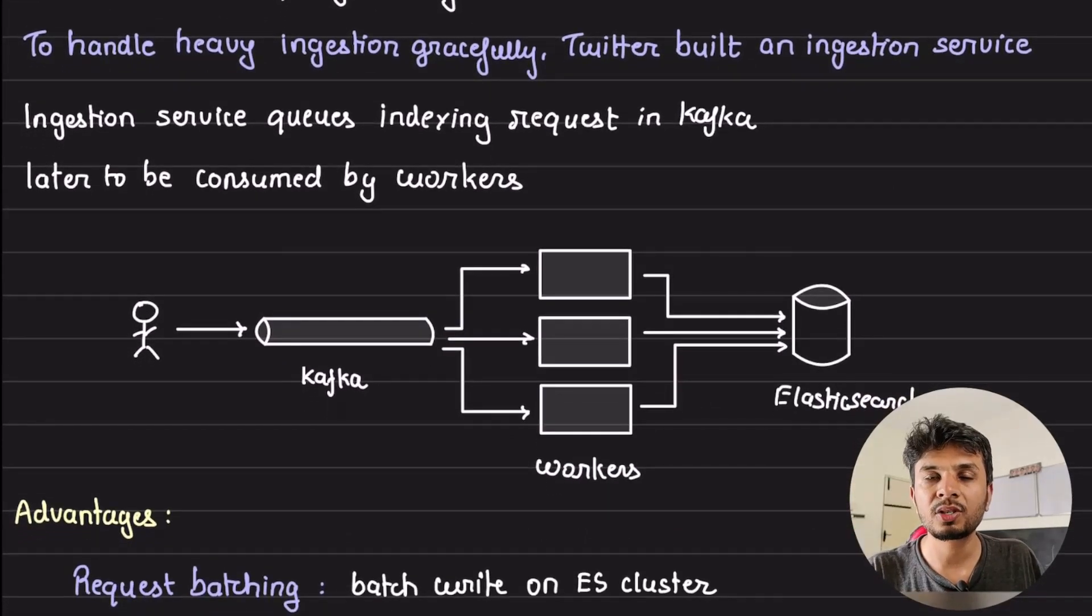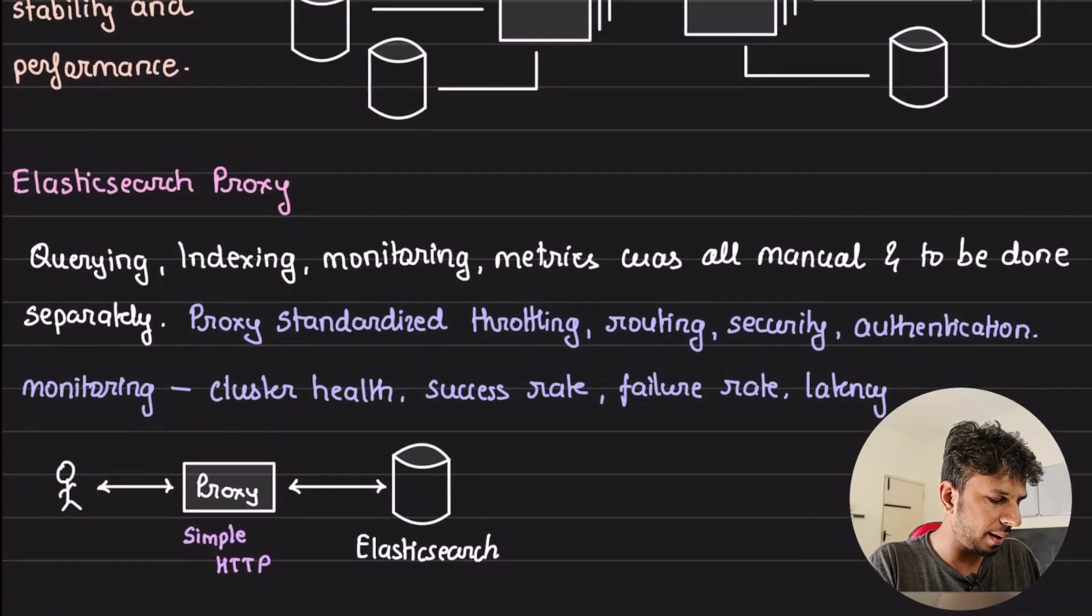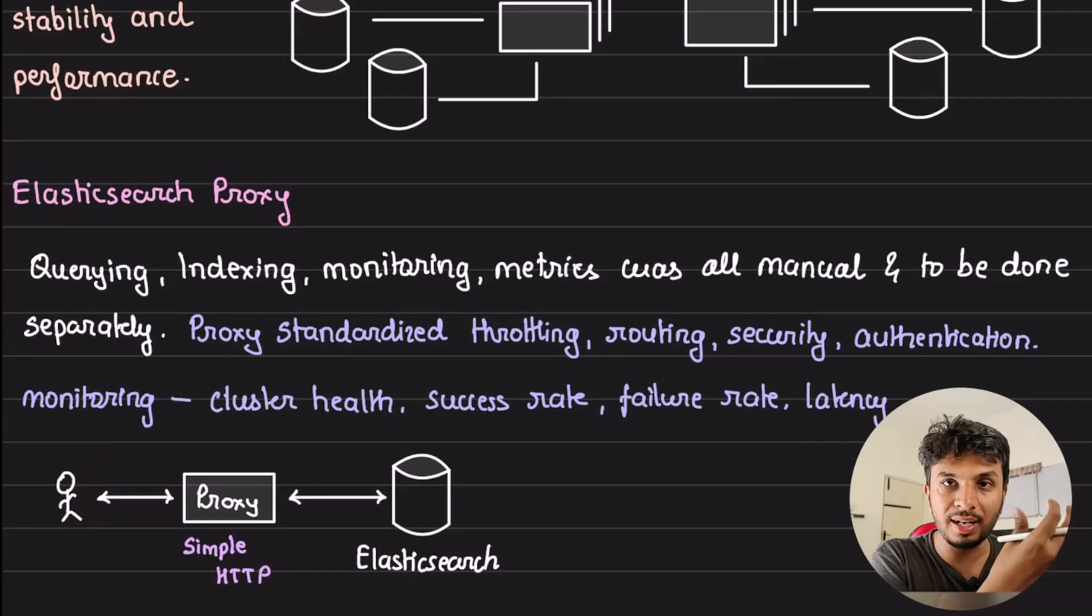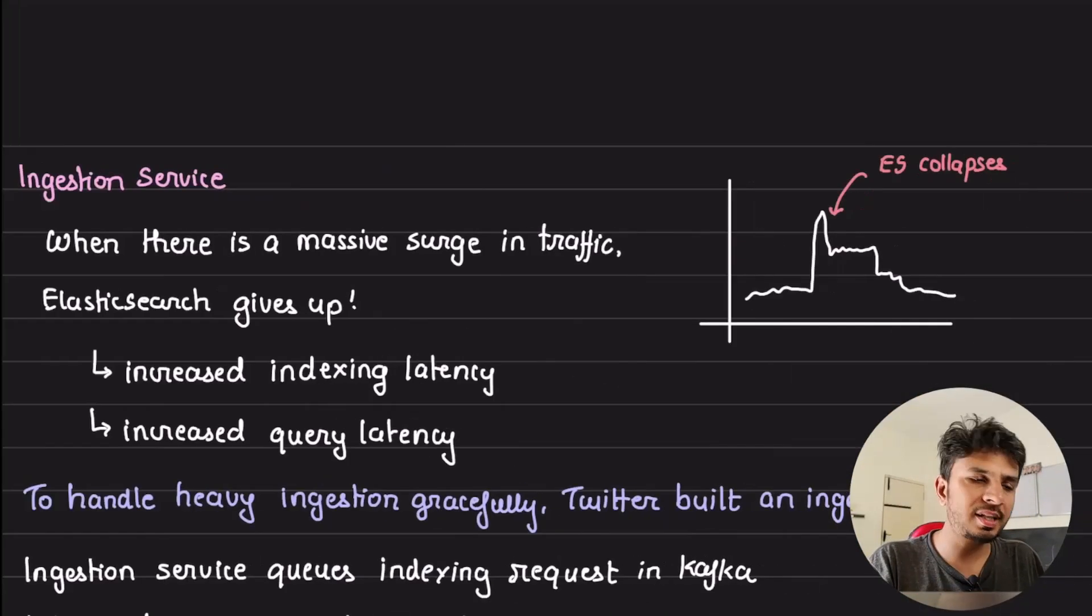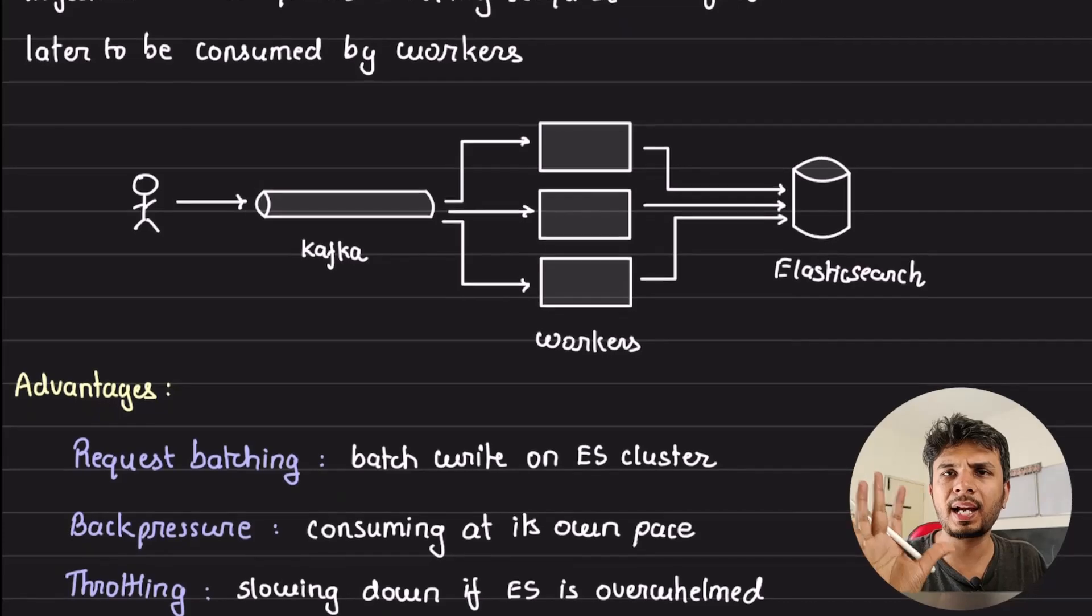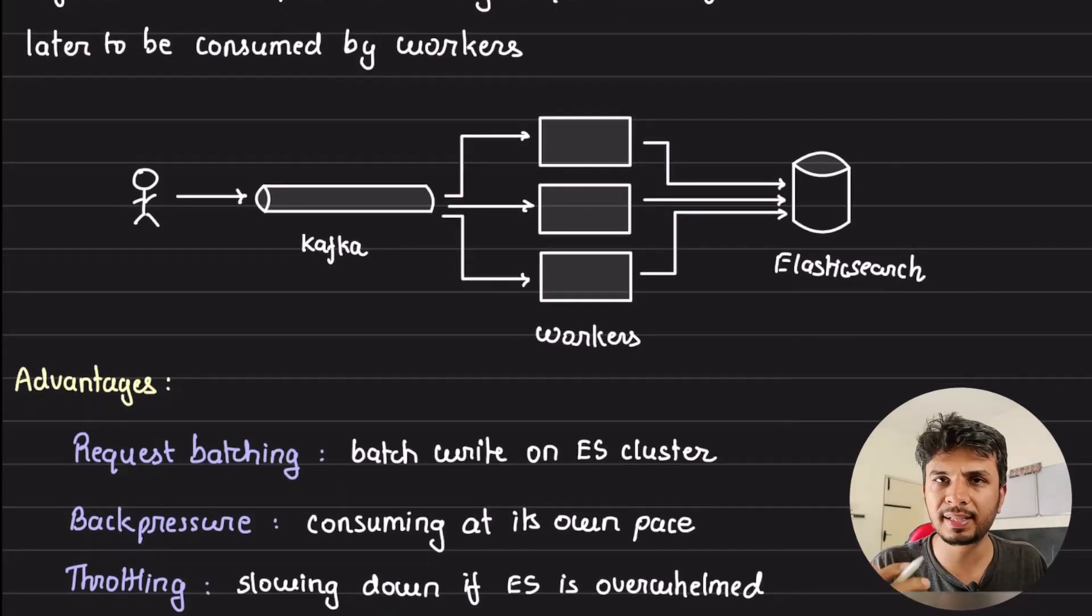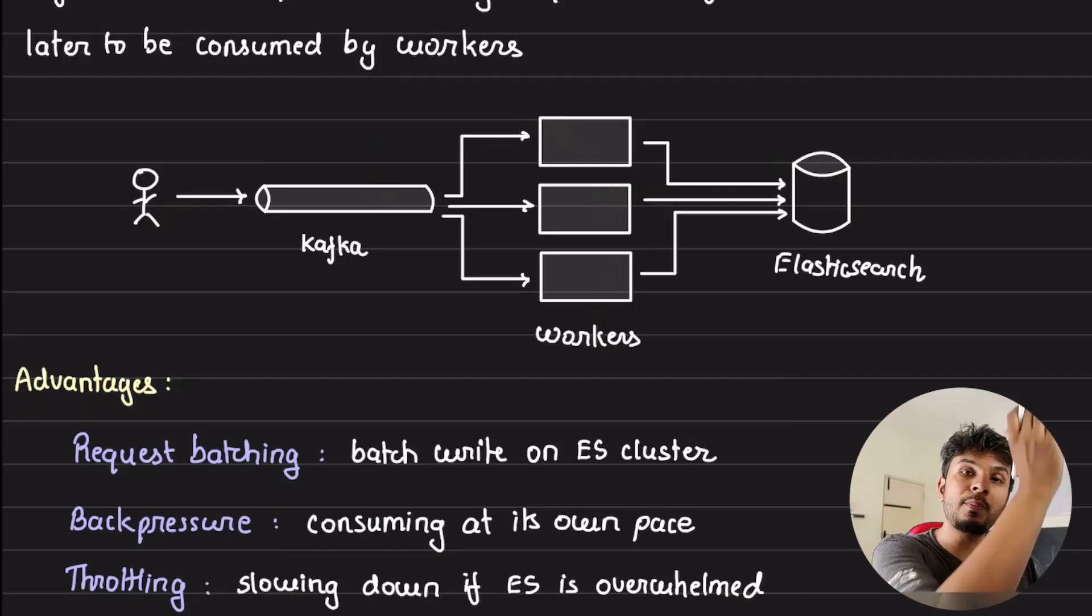So what did they do? Instead of letting that thing directly get ingested into Elasticsearch, they did it in an asynchronous way. So any write coming to be put into Elasticsearch - how it used to happen was people used to directly call Elasticsearch endpoints to put the data. But now there is one more layer sitting before that, which is like a normal single topic Kafka - one topic for each cluster. This is what they have configured and the writes are put into Kafka later to be consumed by workers and then indexed into Elasticsearch.